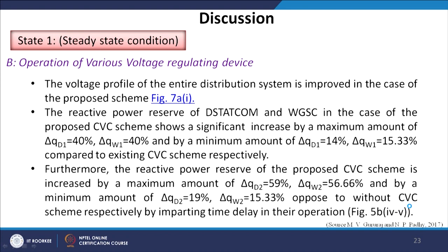Furthermore, the reactive power reserve of the proposed CVC scheme is increased by a maximum amount of 59 percent and 56 percent for DSTATCOM and wind generator respectively, and by a minimum of 19 percent and 15.33 percent respectively, compared to the without-CVC scheme — achieved by imparting a time delay in their operation.